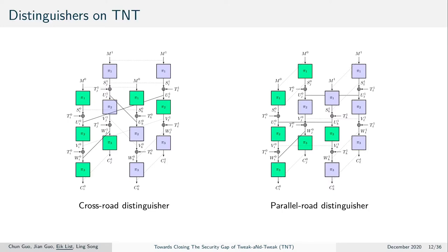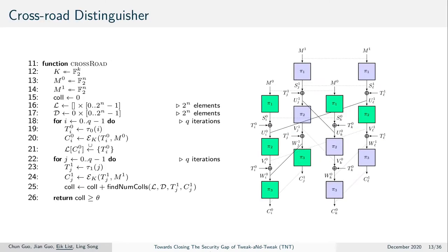We consider two variants that we call the crossroad and parallel road distinguishers, respectively. The illustrations give a hint why we call them that way. Both work in a similar but slightly different manner. The crossroad distinguisher uses tweak-message tuples with two messages, and for each collects a set of tweaks stored in lists. We use two hash tables: a list where ciphertexts are stored and a list where difference counters are stored.